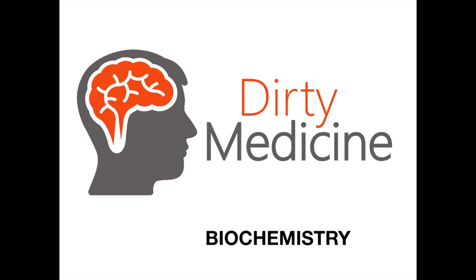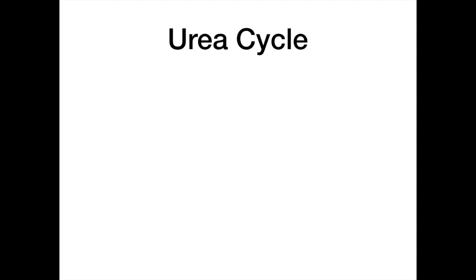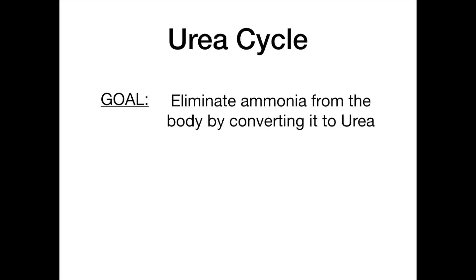Welcome back to Dirty Medicine's biochemistry series. In this video, we're going to be talking about the urea cycle. The urea cycle is a very important biochemical pathway whose main goal is to eliminate ammonia from the body by converting it into urea.